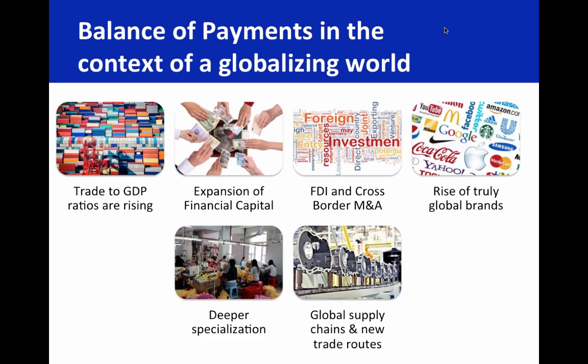Other aspects of globalisation include the rise of truly global brands — the Googles, McDonalds, and Coca-Colas of this world — and also the rise of global brands from emerging and developing countries like Alibaba in China or China Mobile. Increasingly we see a deeper specialisation of goods and services, the breaking down of production — the component parts of the iPhone coming from many different countries — and the rise of truly global supply chains, and the emergence of new trade and investment routes, of which the Chinese Silk Road is just an example. The balance of payments has to be seen in this wider context of significant changes in the global economy.